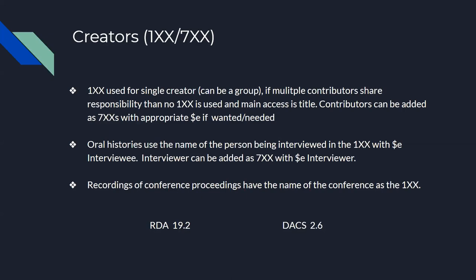The relator codes are very important in these cases. For oral histories, use the name of the person being interviewed in the 100 field with the relator term 'interviewee,' per DACS appendix, and add the interviewer in a 700 field with the relator term 'interviewer.' Recordings of conference proceedings have the name of the conference as the 1xx.